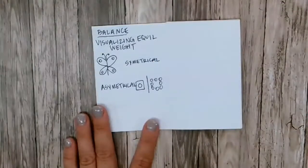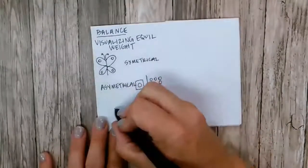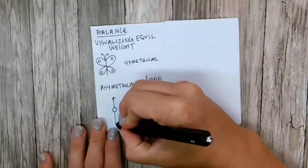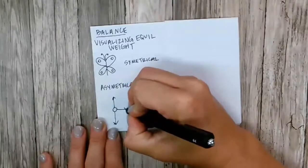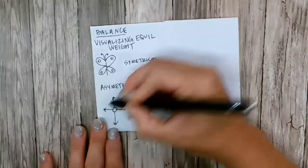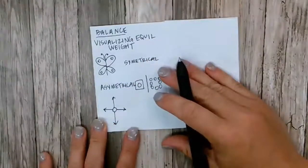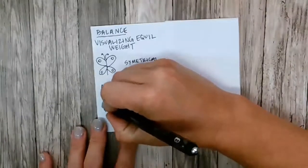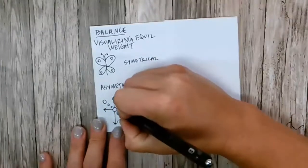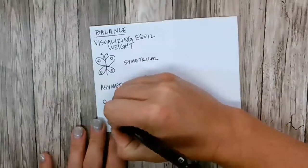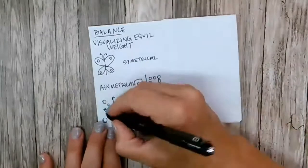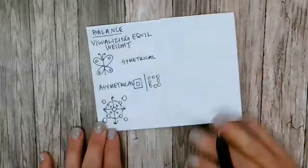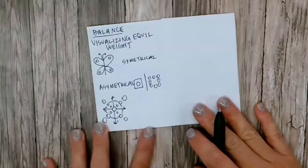And then we have radial balance. Radial balance starts from a center point and goes out from a circle, like a circle. Sometimes I refer to, like, a pizza or a wheel or a compass. So that is radial balance.